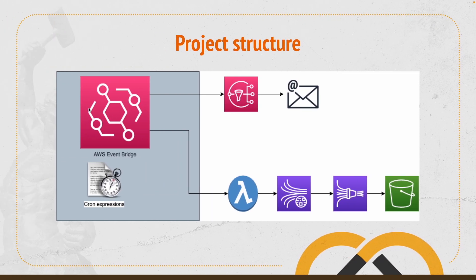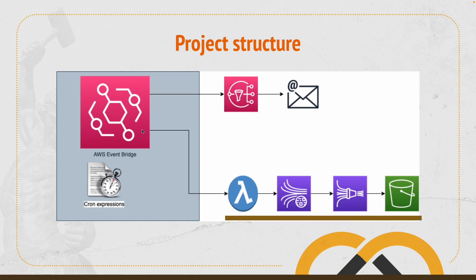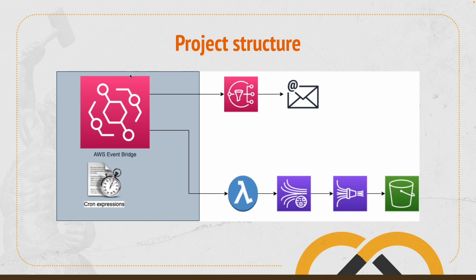So what we're going to do: we're going to have two different cron expressions. The first cron expression will be executed at one specific moment, which will trigger an event to SNS, and SNS will send an email to a specific address. The second event is going to be triggered every minute, which will invoke a Lambda function. The Lambda function will send a message to Kinesis Data Streams, and Kinesis Data Streams is going to send a message to Kinesis Data Firehose. This demonstrates that we can run different services using cron expressions with AWS EventBridge.